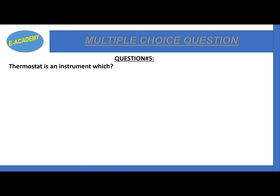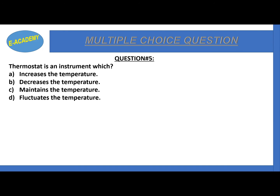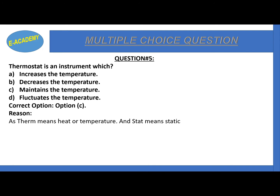Question 5. A thermostat is an instrument which: increases the temperature, decreases the temperature, maintains the temperature, or fluctuates the temperature. The correct option is option C: maintains the temperature. The word 'therm' means heat or temperature and 'stat' means static or constant. So a thermostat keeps temperature constant without fluctuation, increase, or decrease.